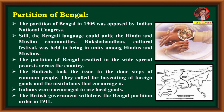Because of all these protests, the British government finally withdrew the Bengal partition in the year 1911. Bengal had been divided into East Bengal with more Muslims and West Bengal with more Hindus. In order to break the unity between Hindus and Muslims, Bengal was divided. Finally, due to the protest from Indians, the division of Bengal was withdrawn in 1911.